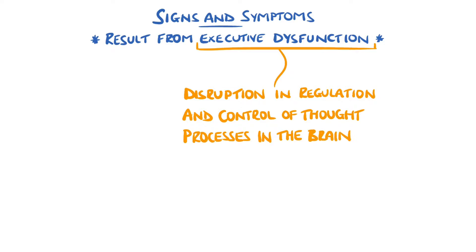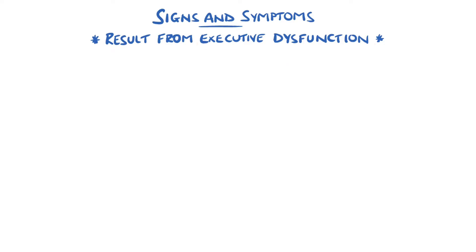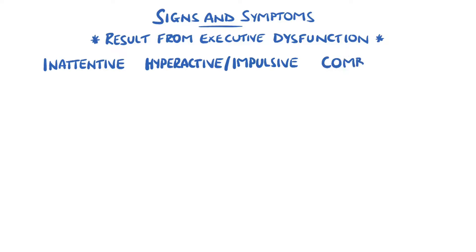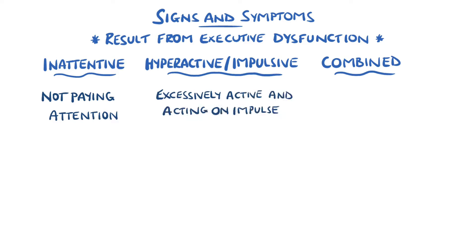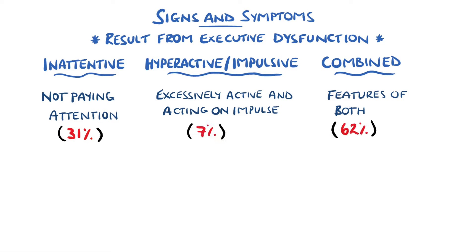Based on these signs and symptoms, there are three main subtypes of ADHD: predominantly inattentive, with features of a lack of attention; predominantly hyperactive-impulsive, where there is an excess of activity and acting on impulses; and combined type, where features of both are present. This is the most common case, seen in around 62% of patients.